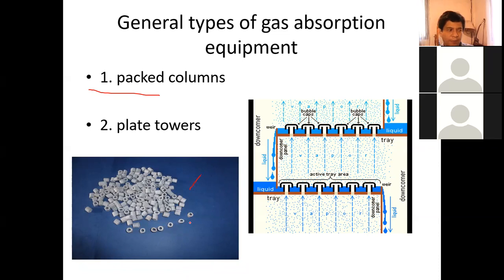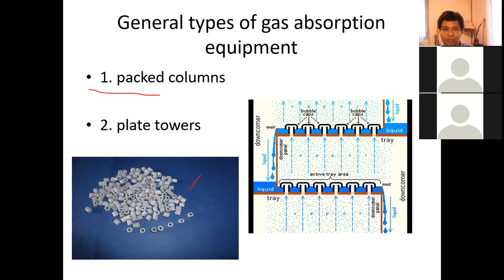These Raschig rings are poured inside the drum. The drum has openings at both ends, covered with a screen to prevent the rings from falling through. At the bottom, the gas — the air containing the solute — is introduced using a blower or compressor. At the top, the liquid solvent is introduced. This allows countercurrent contact between the gas and liquid phases.